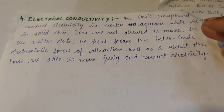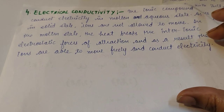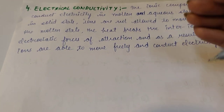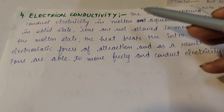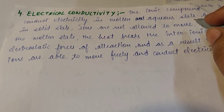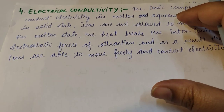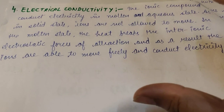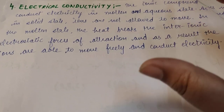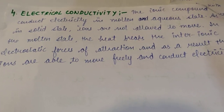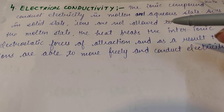The last property is electrical conductivity, which is quite interesting. We might think that ionic substances, which have ions, can conduct electricity. But ionic compounds in the solid state do not conduct electricity, because in the solid state there exists a strong electrostatic force of attraction that does not allow the ions to move. If ions cannot move, electricity cannot be conducted.